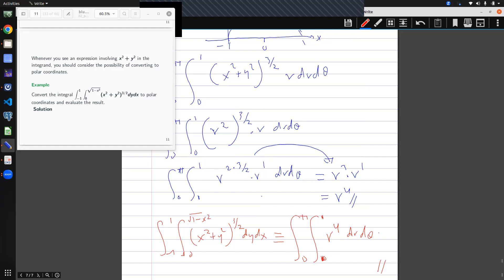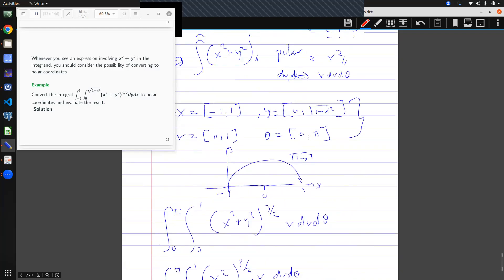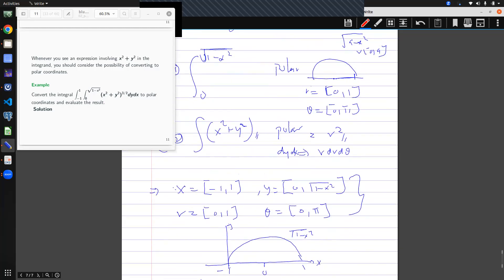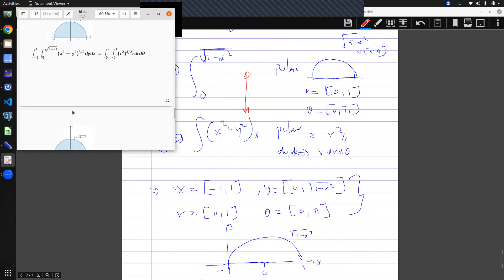And so this is how you convert. If it is not given, it is not stated, the keywords like circles and radius are not stated in the problem, you should be able to convert. You should be able to convert using these two techniques, this and that. The second example. So if you solve it, you get pi on five. The second example. So this is just evaluate that.